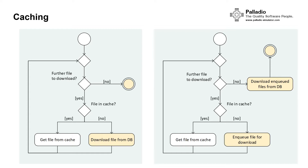In the second alternative, the same check is done for each file, but if the file is not in the cache it is only marked for download. After all files have been checked, all marked files are downloaded from the database to the cache component all at once.